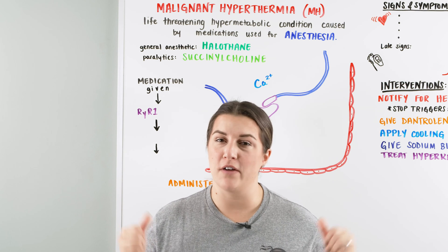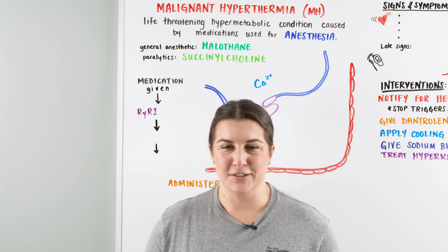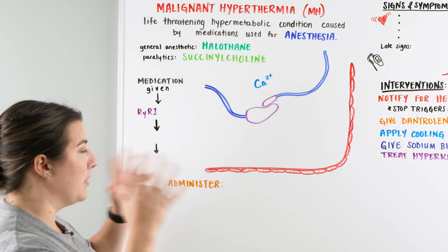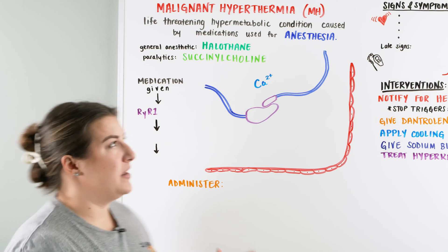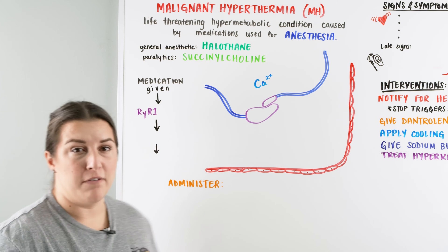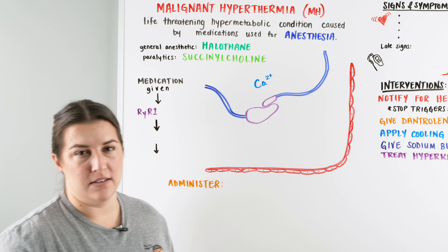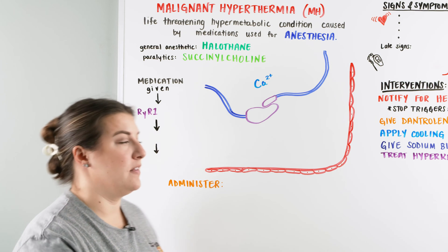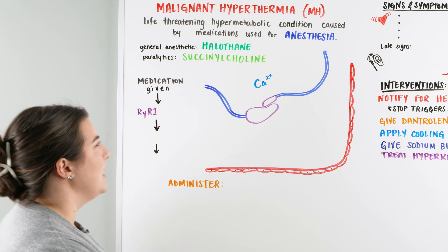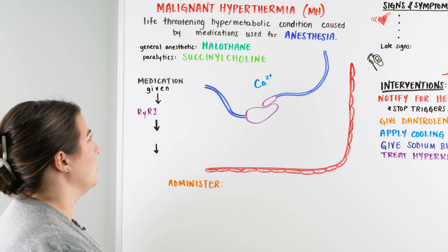Check out NinjaNerd.org — that's where we have all of our notes and illustrations for every lecture we put up on YouTube. So when we talk about malignant hyperthermia, we're talking about this hypermetabolic condition that is life-threatening because of a medication given during anesthesia. You'll commonly see this in an anesthesia setting — usually from a general anesthetic like halothane or the paralytic succinylcholine.